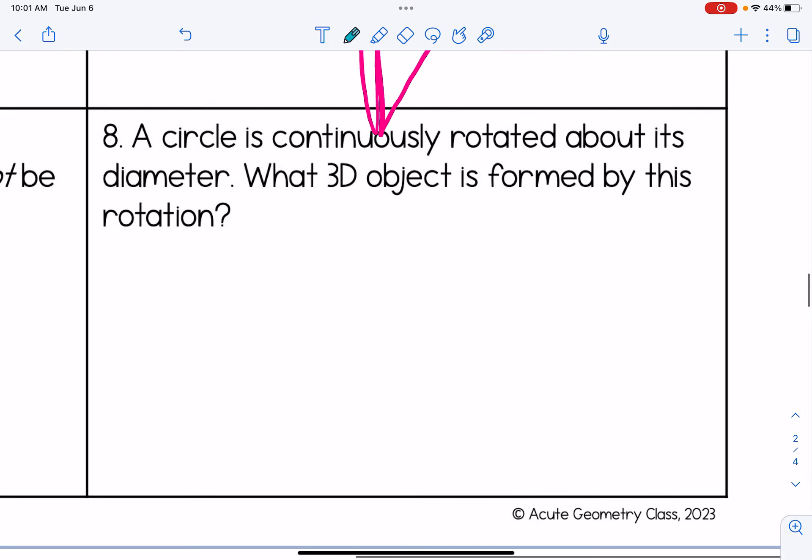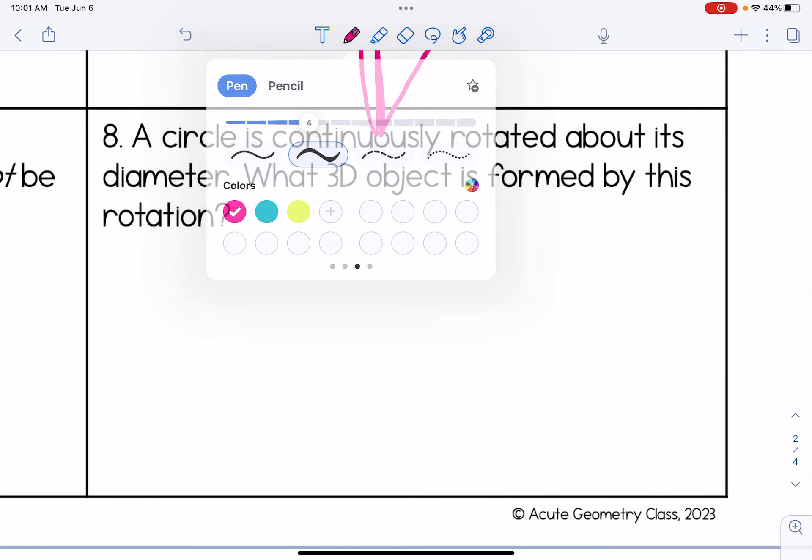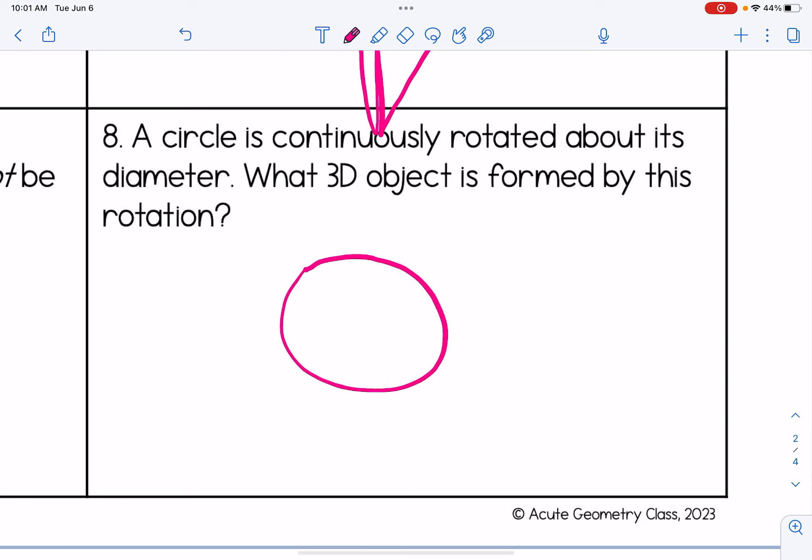All right, for our last question, a circle is continuously rotated about its diameter. So I'm going to just draw this out. So when we're rotating about an axis of rotation, an axis of revolution, remember, we're going to think about it for a second like it's a reflection. So imagine me taking the top half of this circle, reflecting it, it's just going to land right on top of the pre-existing circle.